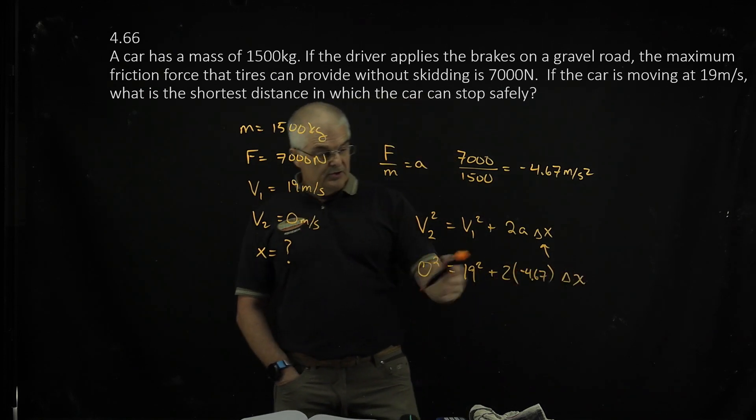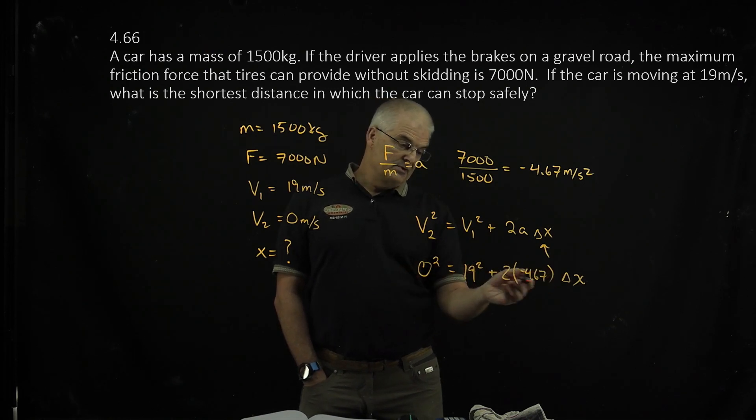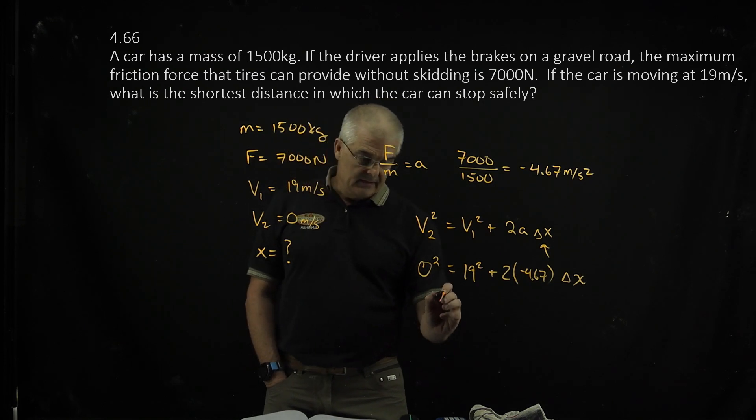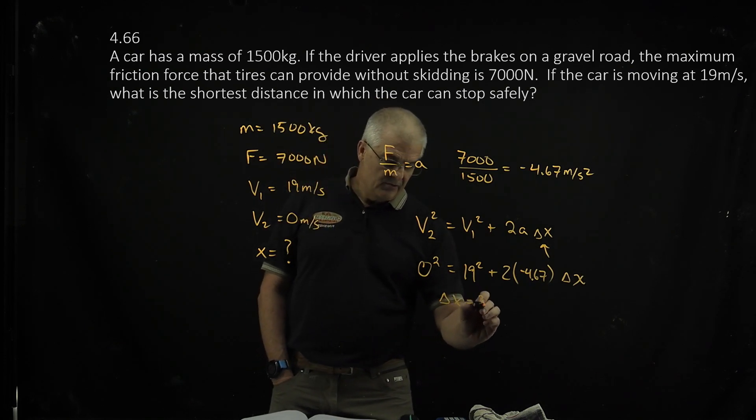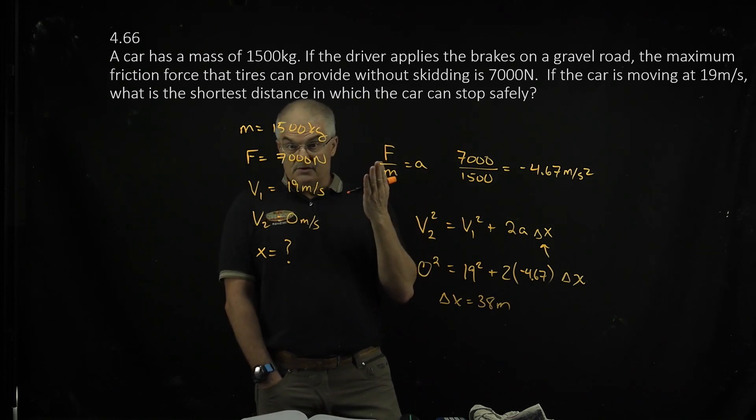And then what you'll do is you set this out. You subtract 19 squared from both sides. You solve this problem mathematically. I'm not going to go out, but you know how to do that. And I get delta X to be 38 meters given this set of variables. Houston, we've got a problem.